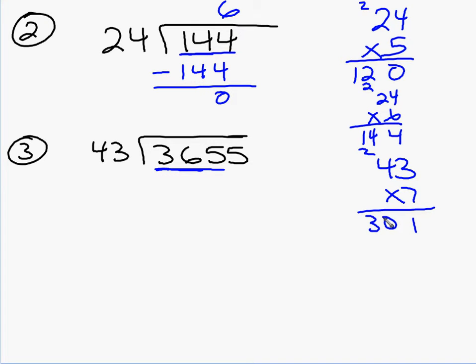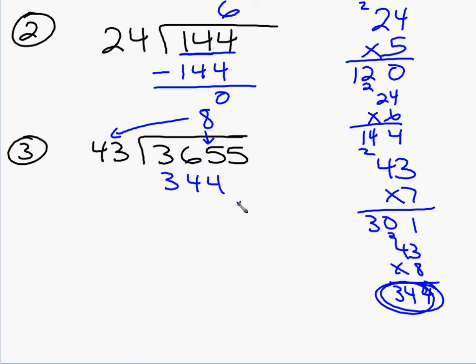I think we should try 43 times 8. So 43 times 8. 8 times 3 is 24. Carry the 2. 32 plus 2 is 34. That's as close as we're going to get without going over because we're at 344. If I add another 43 on to it we'll be bigger than 365. So how do I do this now? I put the 8 right here above this last digit. That's the first thing. Then I take this number. 8 times 43 was 344.